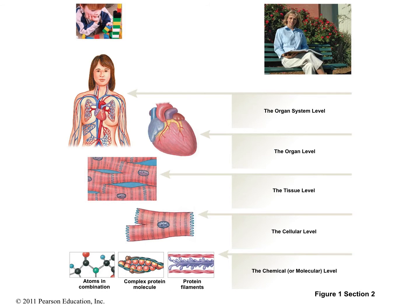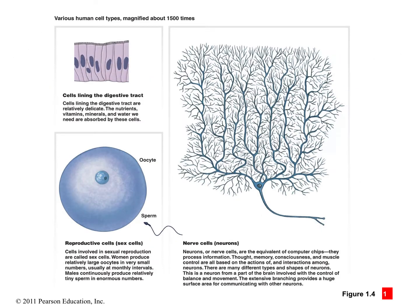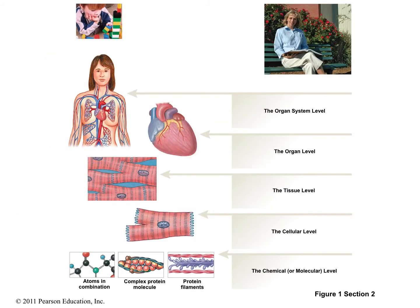There are several different kinds of cells: smooth muscle cells, cardiac muscle cells, skeletal muscle cells, blood cells, bone cells, fat cells, nerve cells, reproductive cells, and epithelial cells. If you have two or more different kinds of cells, you move up to the tissue level. In order to be at the organ level, you need two or more different kinds of tissues.